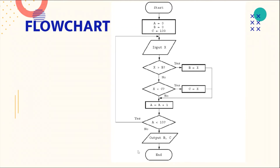This process repeats until a is greater than or equal to 10. Then use a parallelogram and write 'Output b, c' as stated in the pseudocode. Finally, connect an arrow to an oval and write 'End'. This is how you draw the flowchart for this pseudocode.